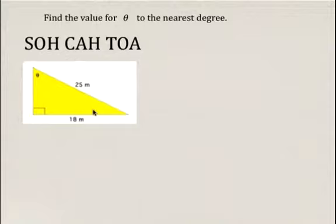First, we're going to identify which sides we're given relative to the angle. We're given the side opposite the angle we're asked to determine, and so the 18 meters is going to be our opposite side.